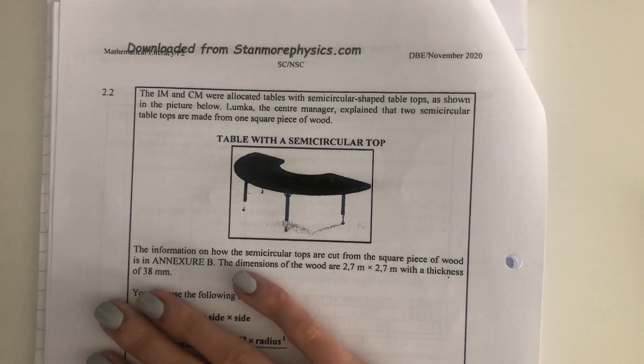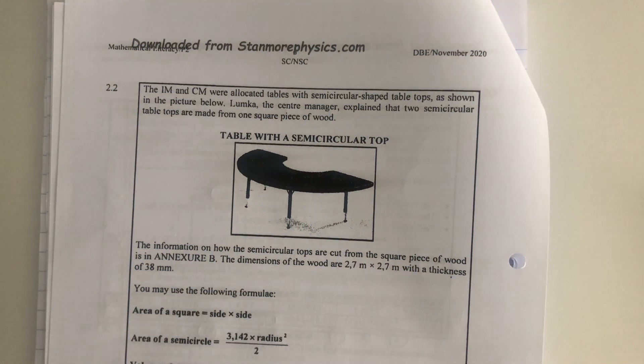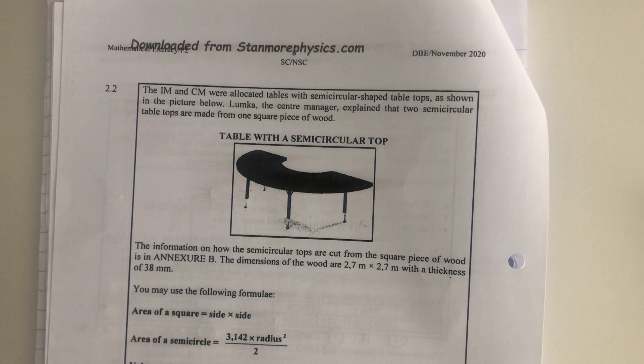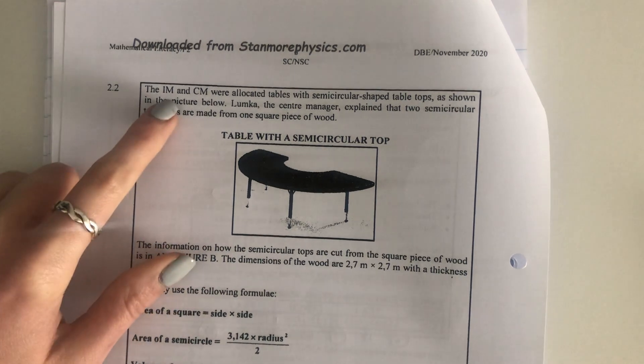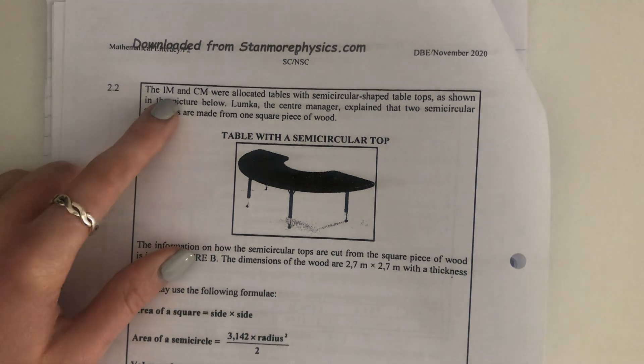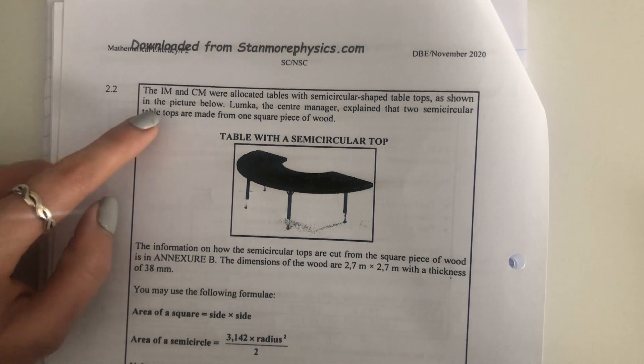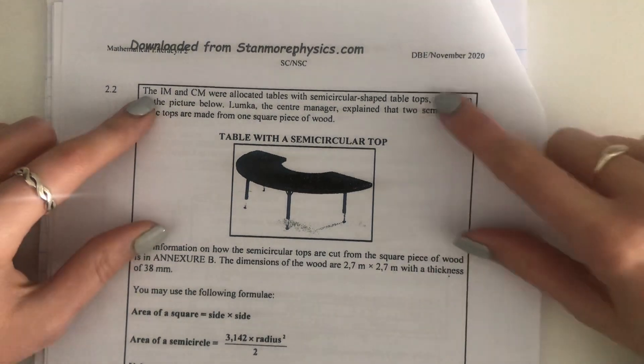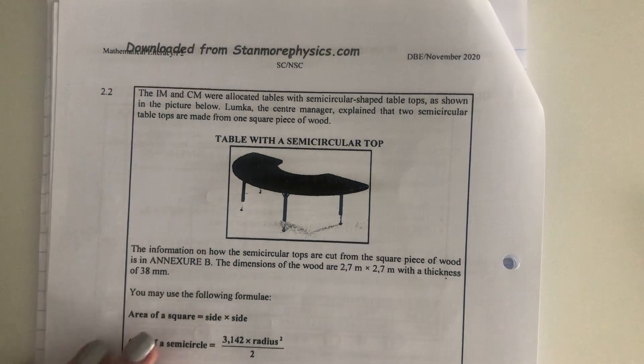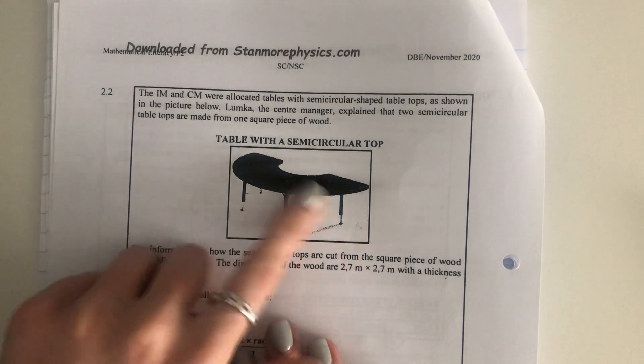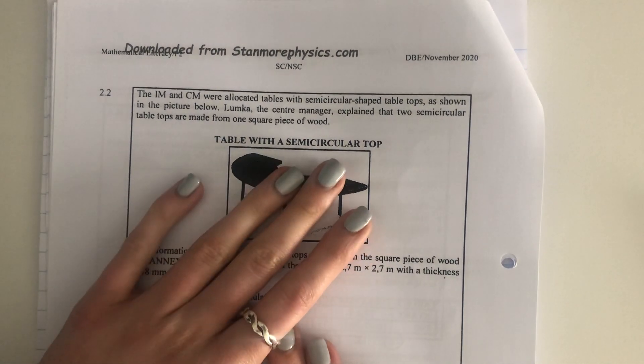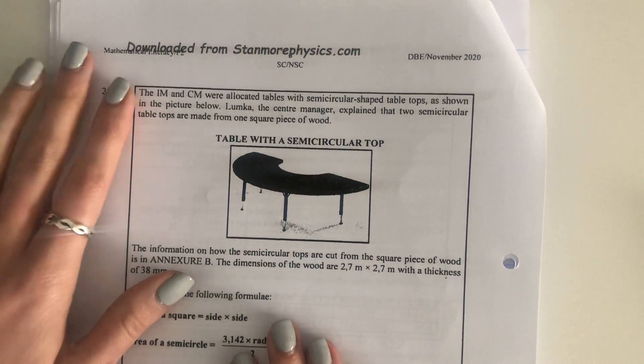Okay, let's start with 2.2. I do still have low chilling, but we're going to persevere nonetheless. So it says the IM and CM, that's the internal moderator and the chief moderator from 2.1, were allocated tables with semi-circular shaped tabletops as shown in the picture below. It's a little bit crusty to see, but I think your actual papers will be printed a bit better than mine.